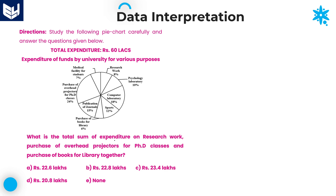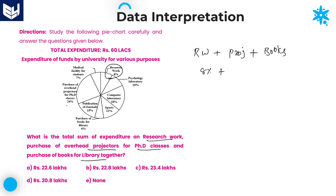Next question: what is the total sum of expenditure on research work, purchase of overhead projectors for PhD classes, and purchase of books for library together? Research work is 8%, projectors for PhD classes is 24%, and purchase of books for library is 6%. Adding: 24 + 6 = 30, plus 8 = 38%. We need to calculate 38% of 60 lakhs.